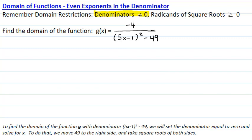To find the domain of the function g of x that has denominator 5x minus 1 squared minus 49, we will set the denominator equal to zero and solve for x. To do that, we will move 49 to the right side and we will get the equation 5x minus 1 squared equals 49, and we will take square roots of both sides.